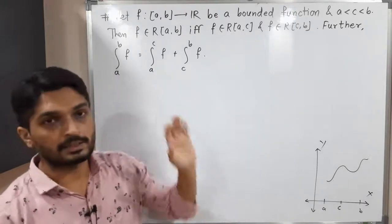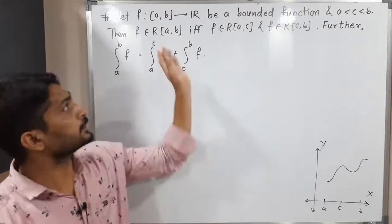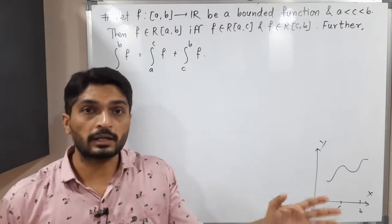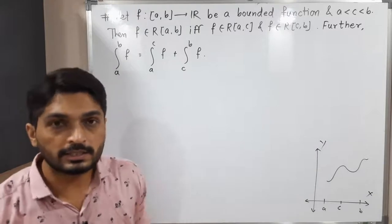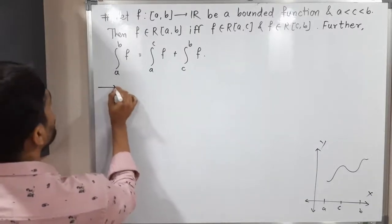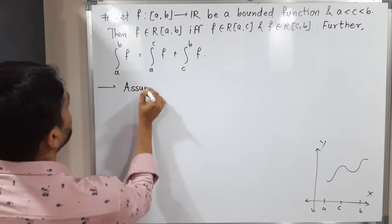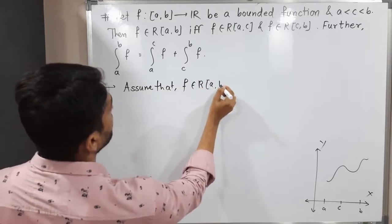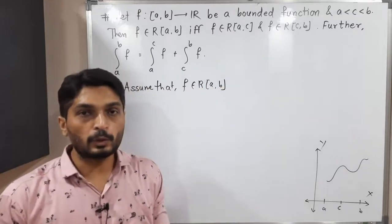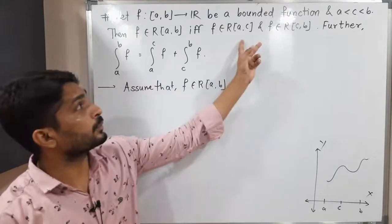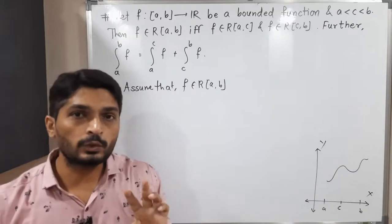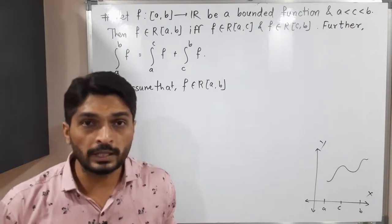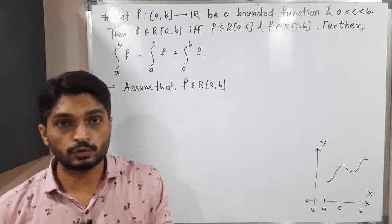We also have to prove an additional result. First we will prove the if and only if part — we assume one part, prove the second part, and then prove the converse. We will assume that f belongs to R[a, b], meaning the function is Riemann integrable on [a, b]. There are two ways to prove Riemann integrability: show upper integral equals lower integral, or use the epsilon definition.